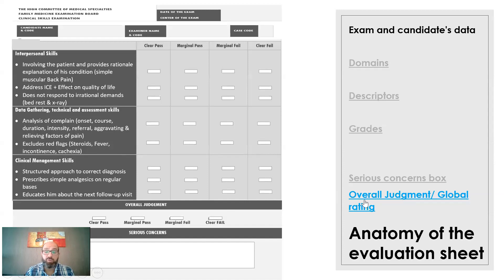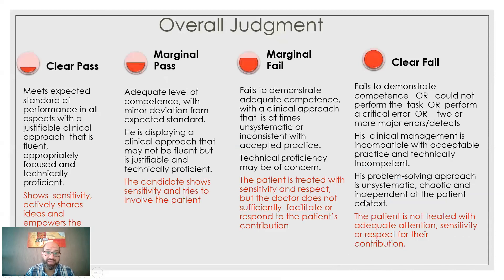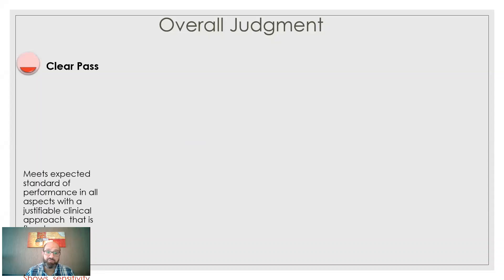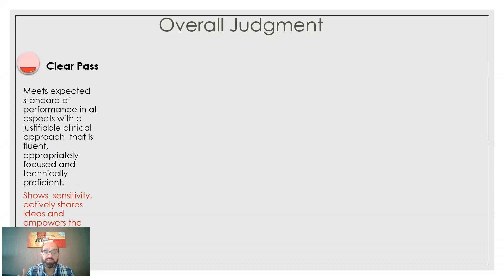The last thing is the overall judgment, also known as the overall rating of the candidate. We also have four categories. In other examinations, we might have different categories for the overall judgment. The overall judgment is very helpful in the standard setting of the OSCE exam, and we will come to this after maybe one or two presentations. You will see the significance of the overall judgment later.